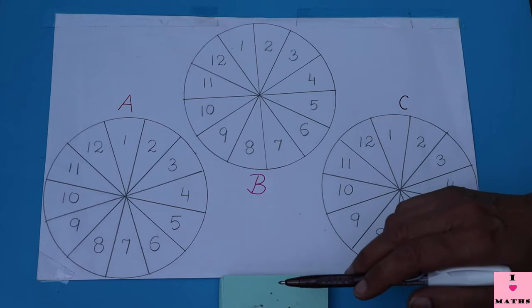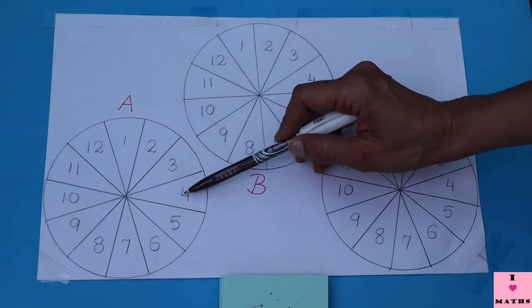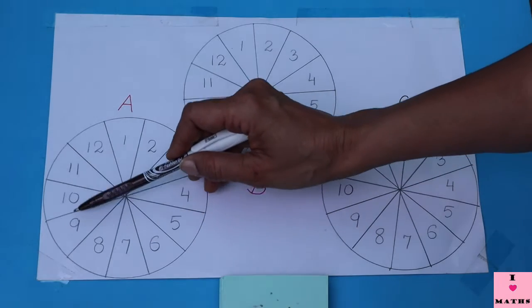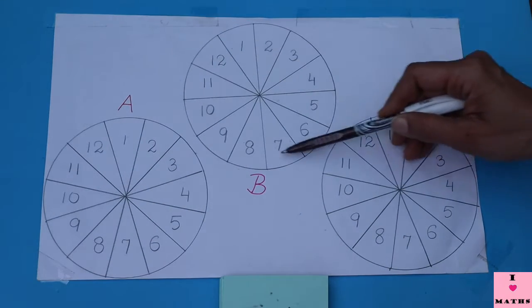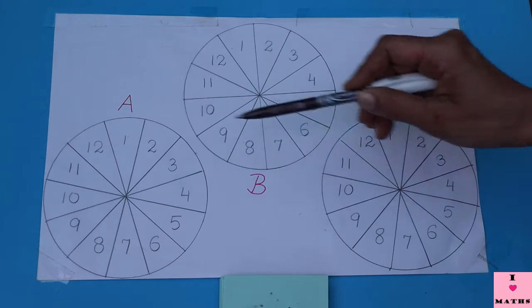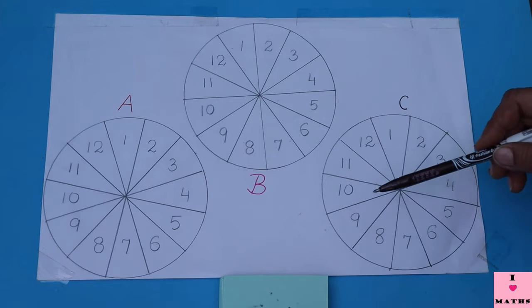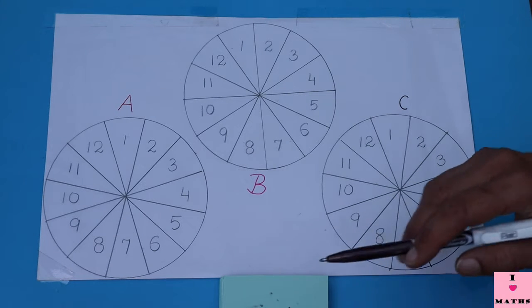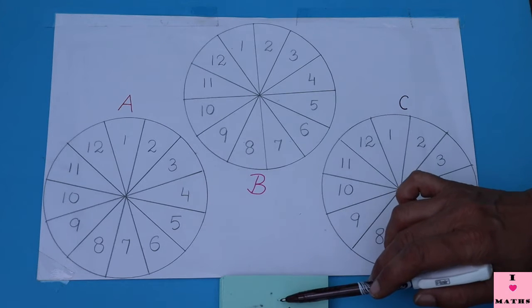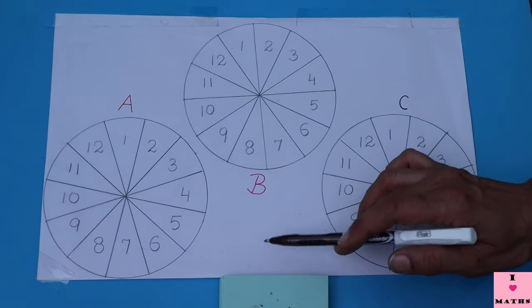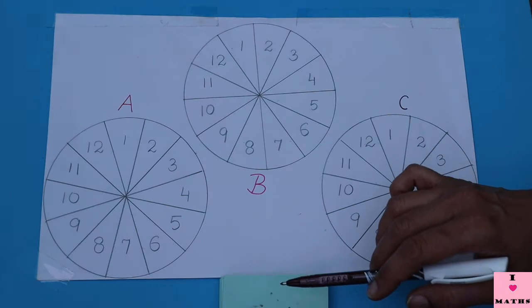Now children, you can see that the numbers start from 1, 2, 3, 4, 5, 6, 7, 8, 9, 10, 11, 12. So there are 12 parts of each circle. This is A, this is B, and this is C. So let us start the game. A will first pick up the slip and keep it straight here just for you to see what is the fraction written on the slip.